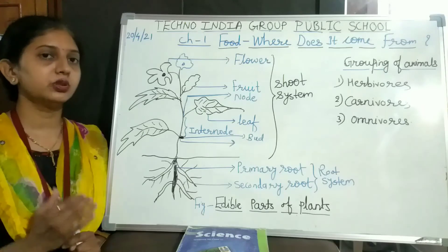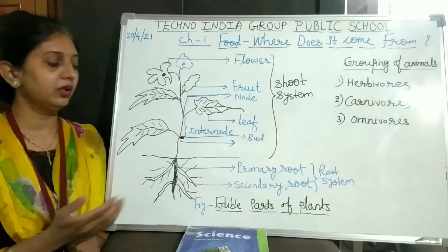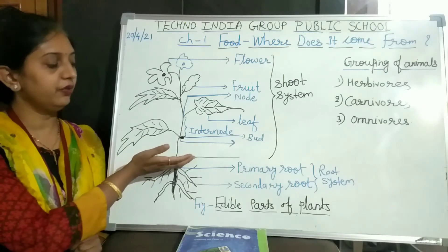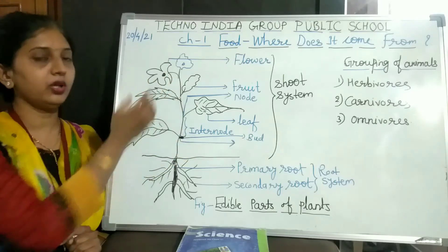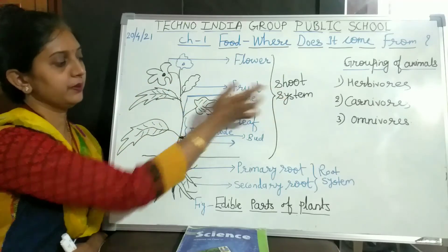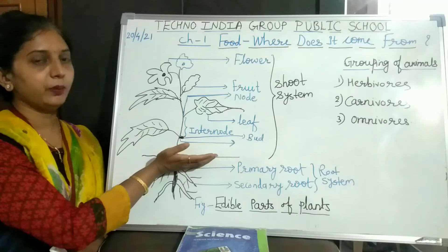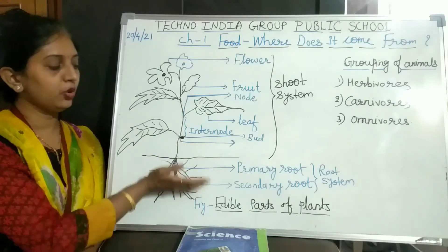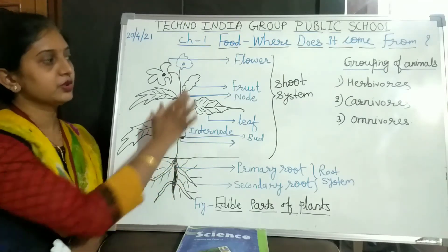Those parts of the plants which we see above the soil, we call the shoot system. And the part of the plant which is below the soil, we call the root system.